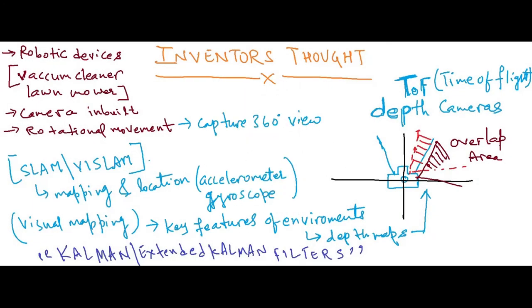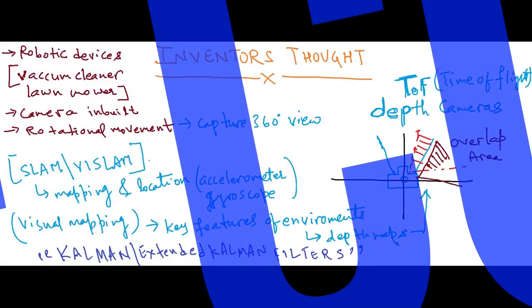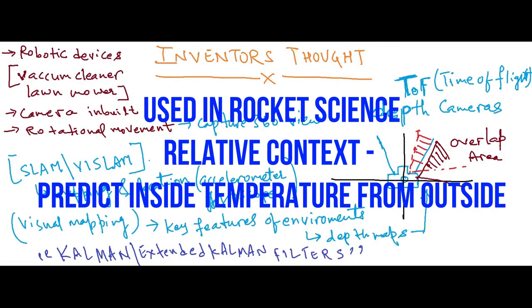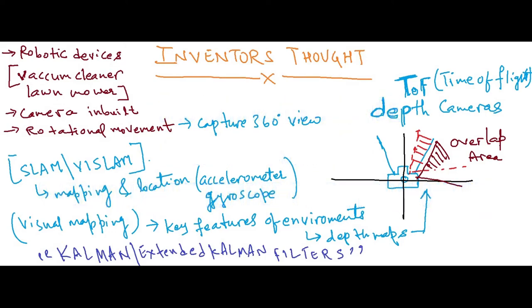For the patented invention of floor mapping, important terminologies to understand are SLAM used with Kalman filters. Kalman filtering algorithm is series of measurements observed over time. It is used for prediction of data in relative context. Please read about it in details.